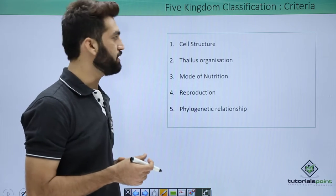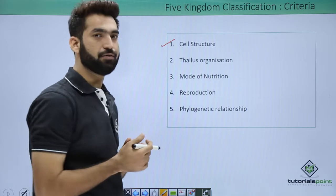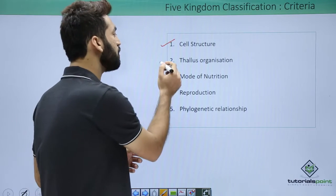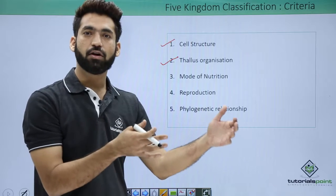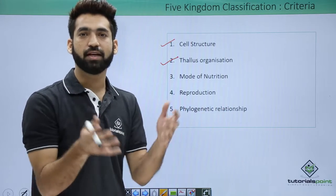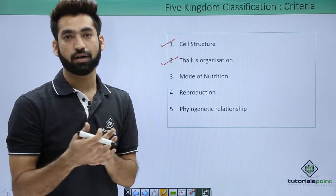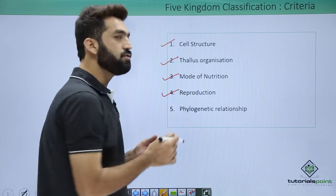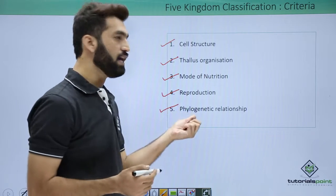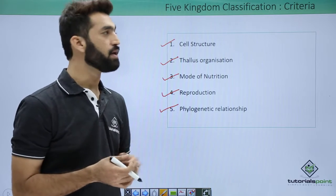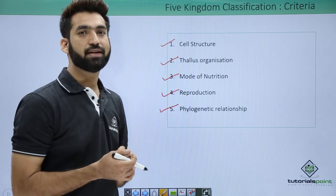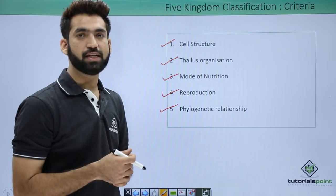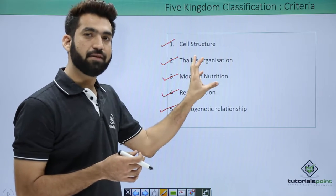First, he looked at cell structure — whether the cell is prokaryotic or eukaryotic. Second, he considered thallus organization: whether the body is cellular, or has tissues, organs, or organ systems. He also considered autotrophic versus heterotrophic mode of nutrition, reproduction, and finally phylogeny — which is evolutionary relationship. Organisms were clubbed into the five kingdoms based on these five criteria.